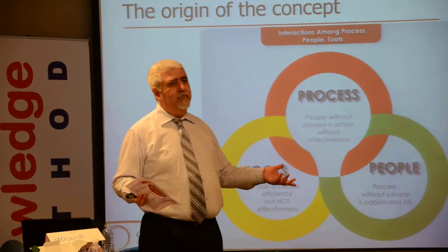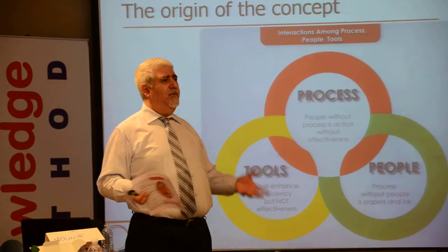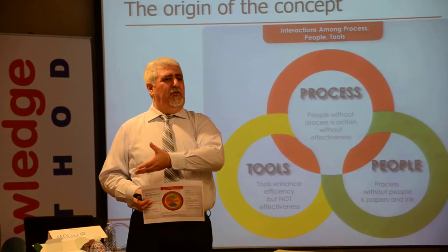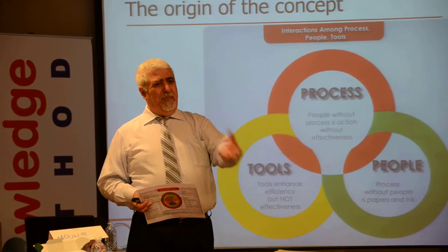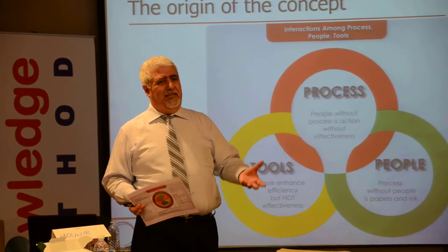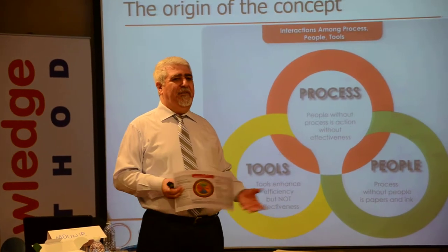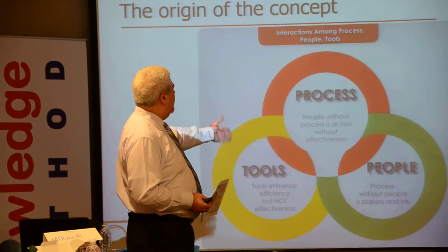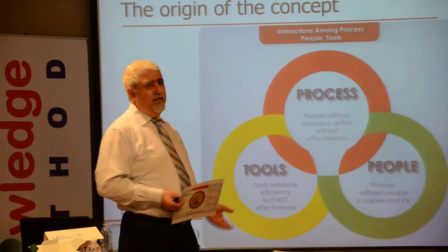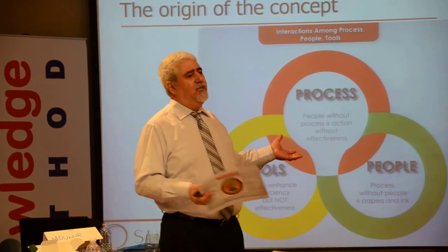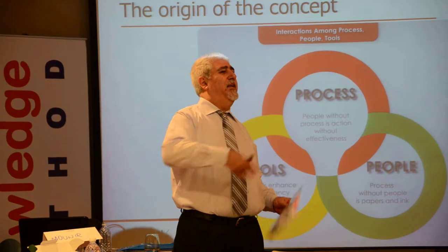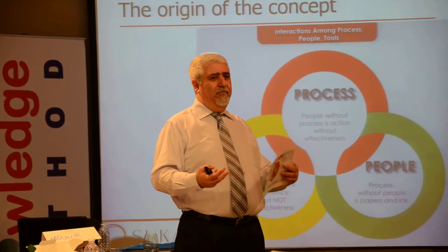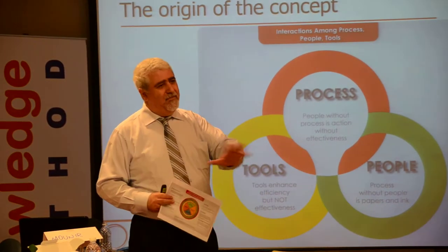Process without people is basically meaningless — you have a process, as mentioned earlier, but we don't follow it. The people element is missing, and therefore you don't have an effective system. And if you have the process but not the people, I call this action without effectiveness — we do a lot of running around but we're not very effective.